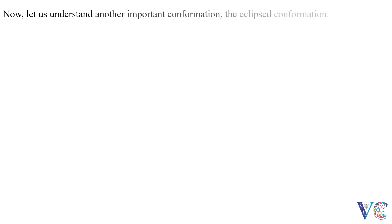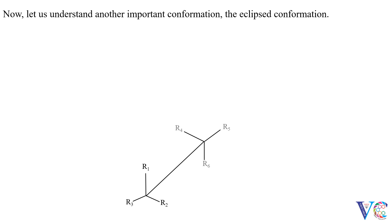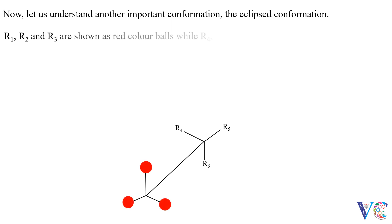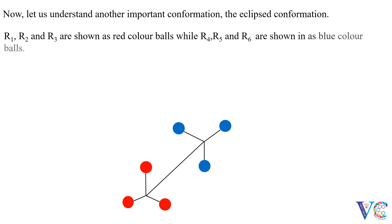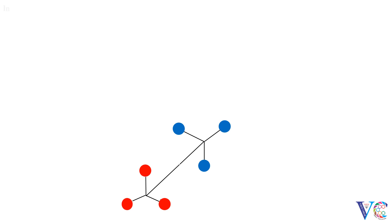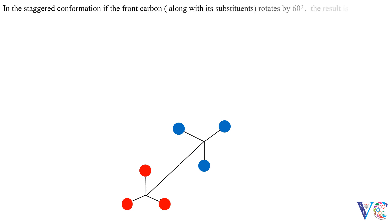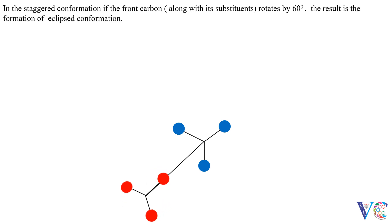Now let us understand another important conformation — the eclipsed conformation. R1, R2, and R3 are shown as red color balls, while R4, R5, and R6 are shown as blue color balls. In this staggered conformation, if the front carbon along with its substituents rotates by 60 degrees, the result is the formation of eclipsed conformation. The dihedral angle in eclipsed conformation is 0 degrees.